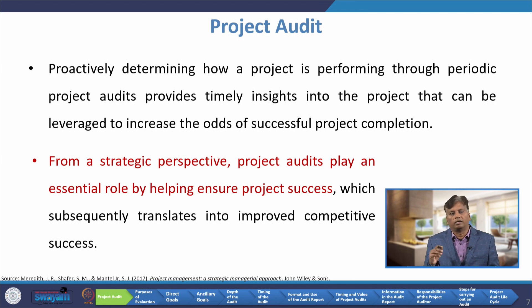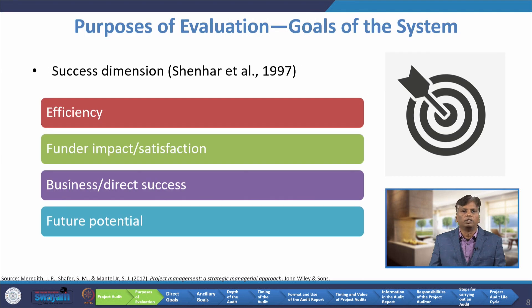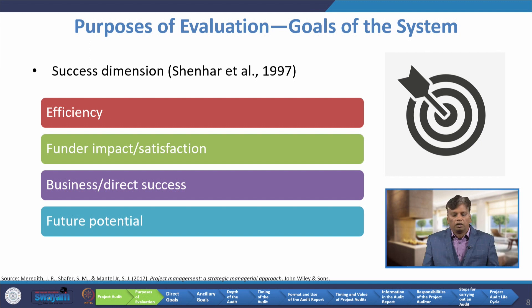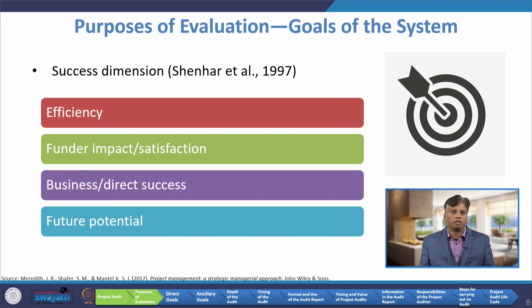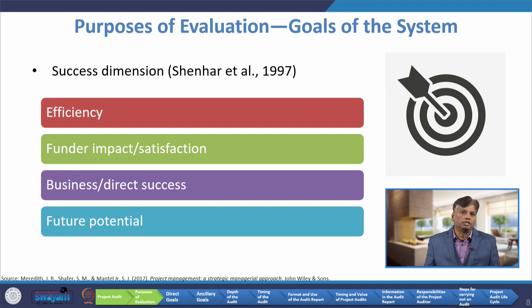Whenever we do the project audit, that indirectly helps to achieve our project competitiveness and success. Now we will discuss about the purpose of evaluation and goals of the system. Shenhar has explained four dimensions for success of any project: the first dimension is efficiency, the second is funder impact and satisfaction, the third dimension is business direct success, and then future potential.